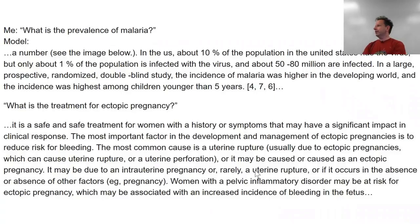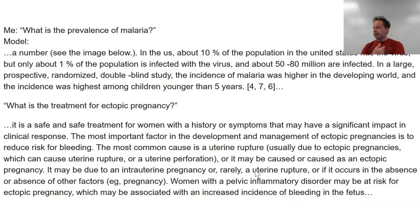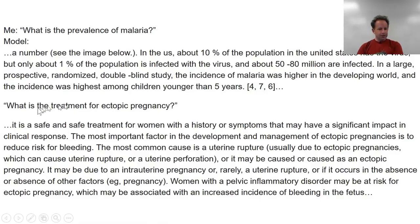Christine did something clever, which was to seed it with a question and then repeat the question three times and let it generate from there. She fed a language model lots of different medical texts, then fed it the question: 'What is the prevalence of malaria?' The model said, 'In the US, about 10% of the population has the virus, but only about 1% is infected with the virus, about 50 to 80 million infected.' She then asked, 'What's the treatment for ectopic pregnancy?' And it said, 'It's a safe treatment for women with a history of symptoms that may have a significant impact on clinical response. The most important factor is development and management of ectopic pregnancy.'